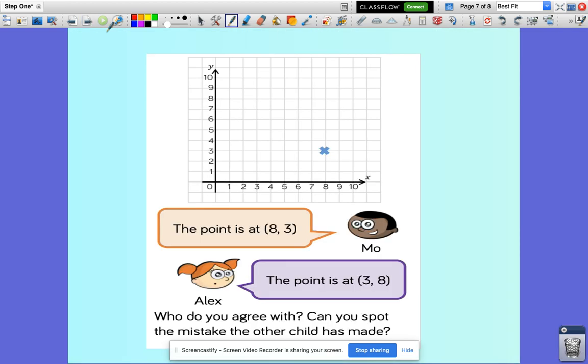So we've got a point that's being plotted here. So Mo says the point is (8, 3), coordinates for that point. And Alex says the coordinates are (3, 8). Who do you agree with? Can you spot the mistake the other child has made? So hopefully you'll remember. Along the corridor, up the stairs. The coordinates for that point are (8, 3). So actually Mo is correct.